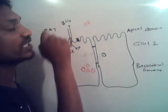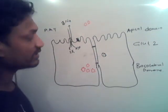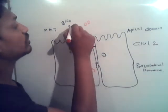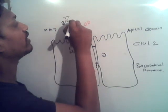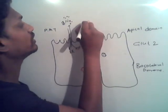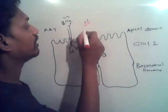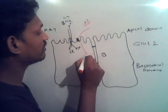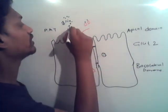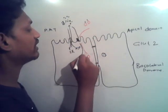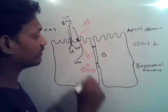We consume ATP for sending sodium ions outside of the cell, and this creates an energy gradient. Now, 2 sodium molecules bind to a single glucose molecule and come inside the cell. Sodium also comes inside the cell — 2 sodium ions and 1 glucose molecule enter together.